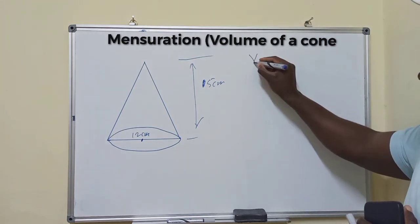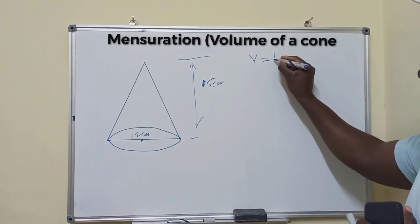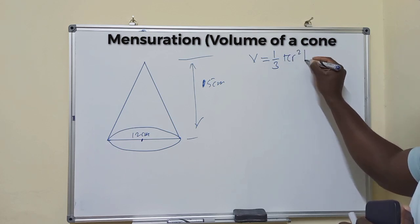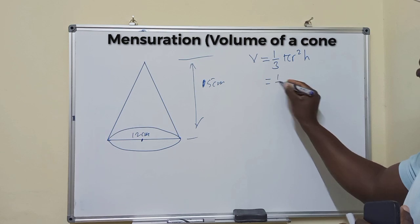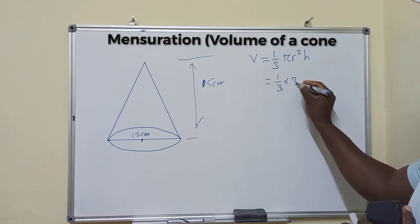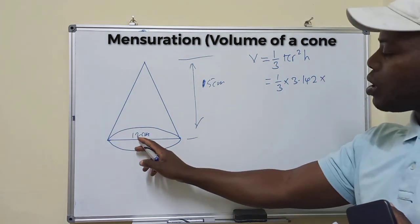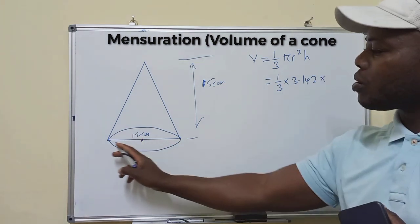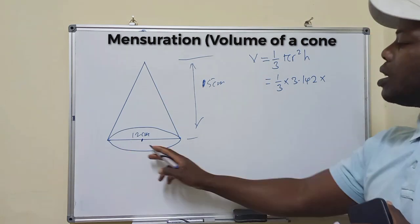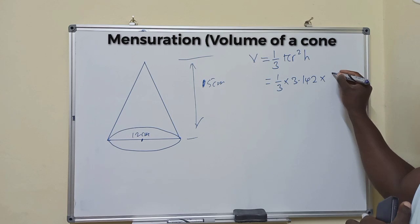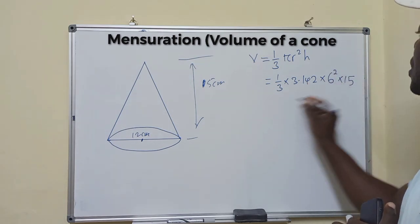We go to the formula, which is volume is equal to 1 over 3, area of the base is pi r squared times height. So 1 over 3 times 3.142, this is the pi, times the radius. Now look, they've given us the diameter from here to here, but we need the radius. So the radius will be half of this, which is 6. So just 6 squared times the height, which is 15.